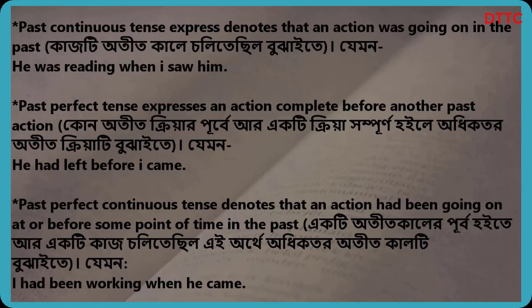Past perfect continuous tense denotes that an action had been going on at or before some point of time in the past. For example: I had been working.